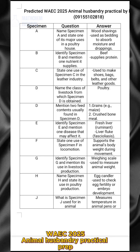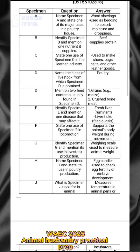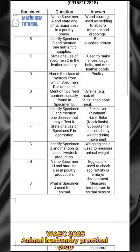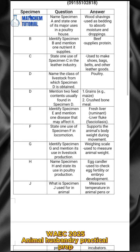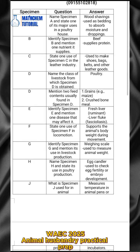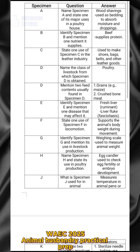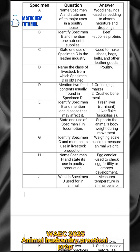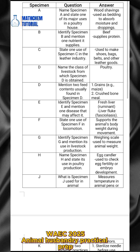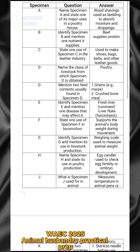For specimen B, you have to identify it and mention one nutrient it supplies. Specimen B is beef, and it supplies protein.